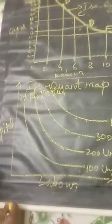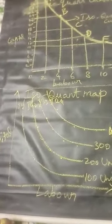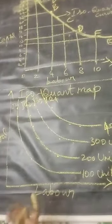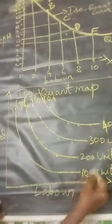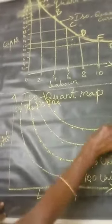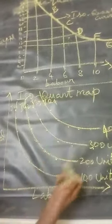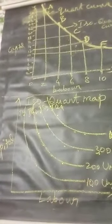And it represents the different combinations of factors of production yielding different levels of output. That is 100 units, 200 units, 300 units, 400 units. Each iso-quant curve yields different level of output.